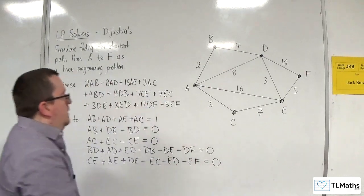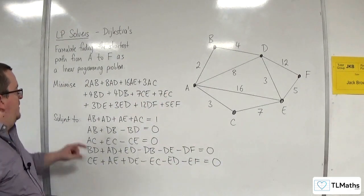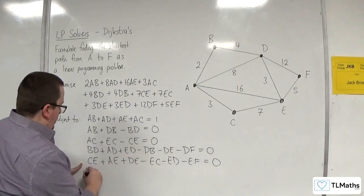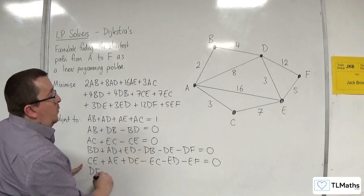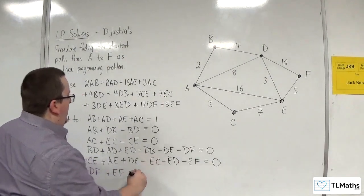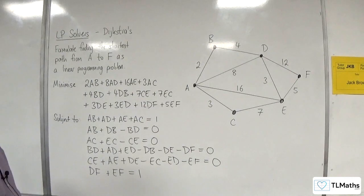Right, and that's A, B, C, D, E. One left. So F. So the routes into F are either DF or EF. Only one of those is going to get picked. So that's equal to one.